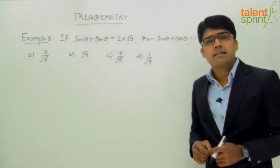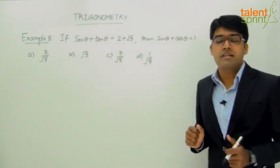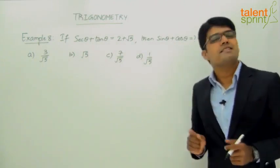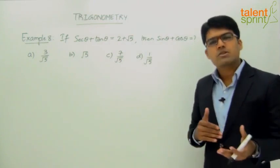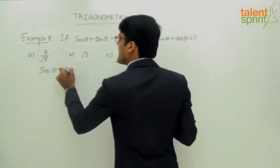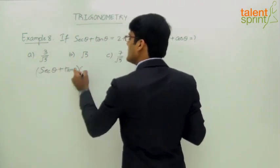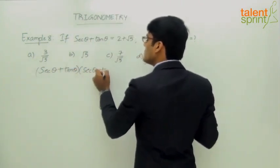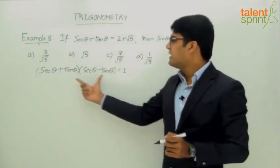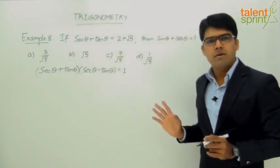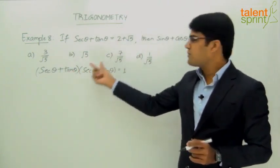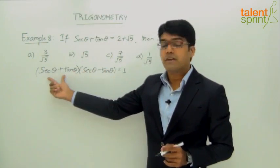We know the identity: secant squared theta minus tan squared theta equals 1. We can factor the left side as secant theta plus tan theta into secant theta minus tan theta equals 1, using the identity a² minus b² equals (a+b)(a-b). We already know secant theta plus tan theta equals 2 plus root 5, so we substitute that in.